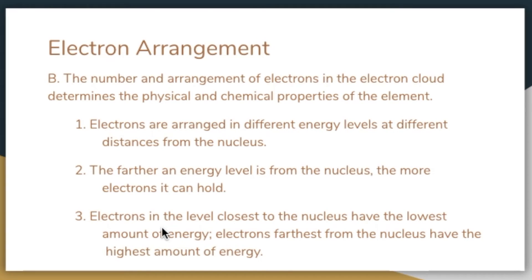The electrons in the level closest to the nucleus have the lowest amount of energy — they're happiest, closest to that positive charge. Electrons farther from the nucleus have the highest amount of energy and are loosely held together by the positive charge, meaning they can move around more. Those are also the ones easier to remove, share, or displace based on how that element or atom is going to react. Let's take a look at those energy steps on page 164.